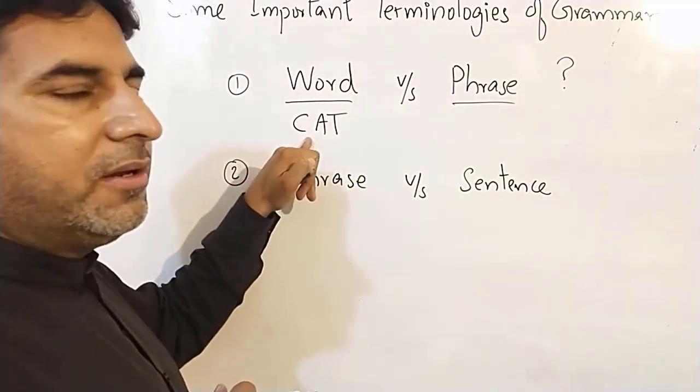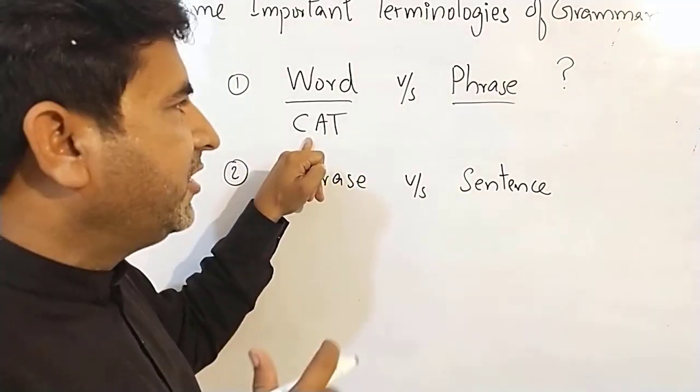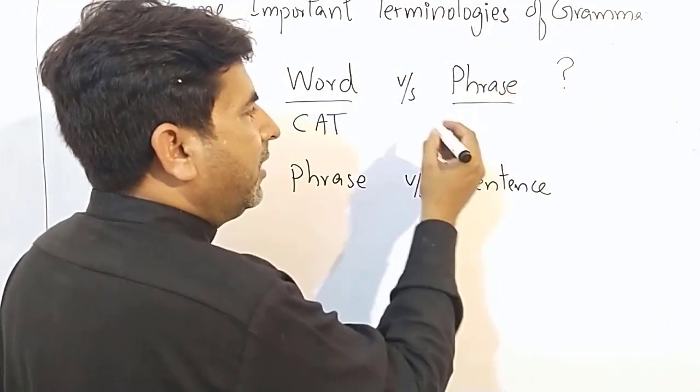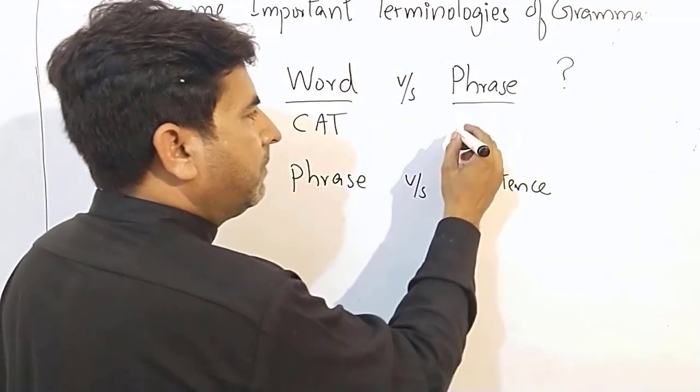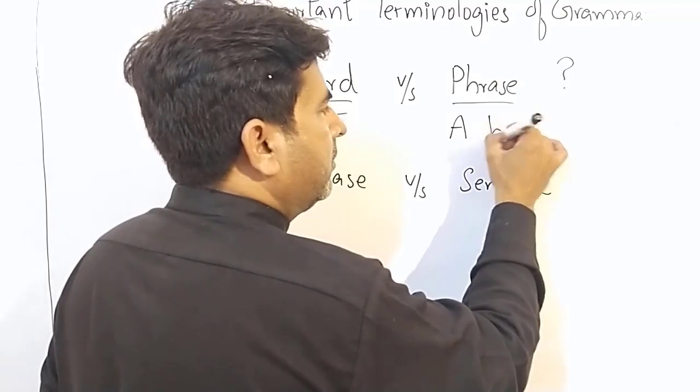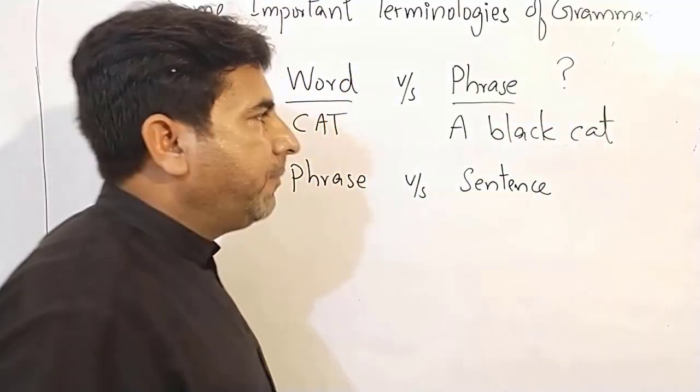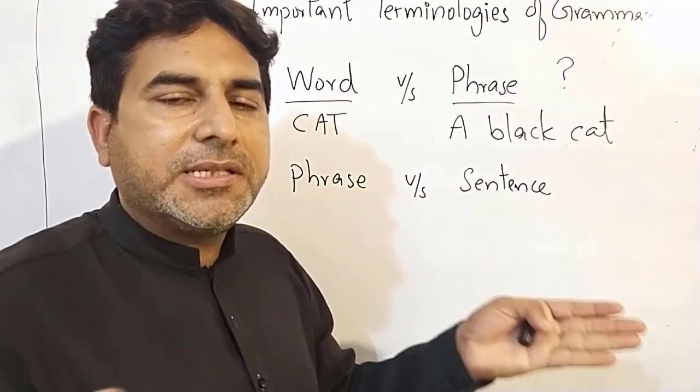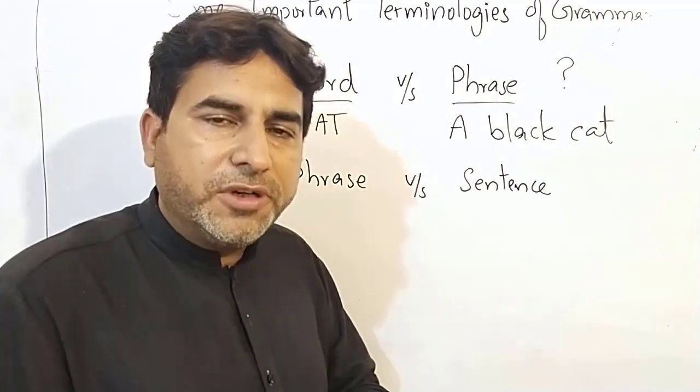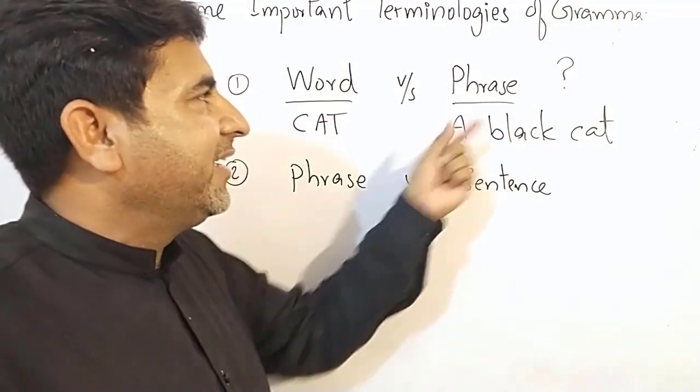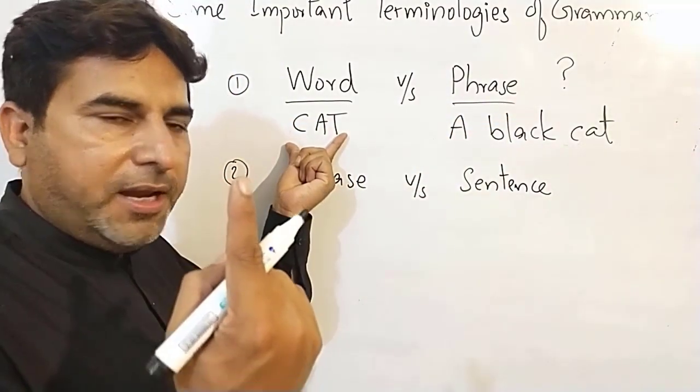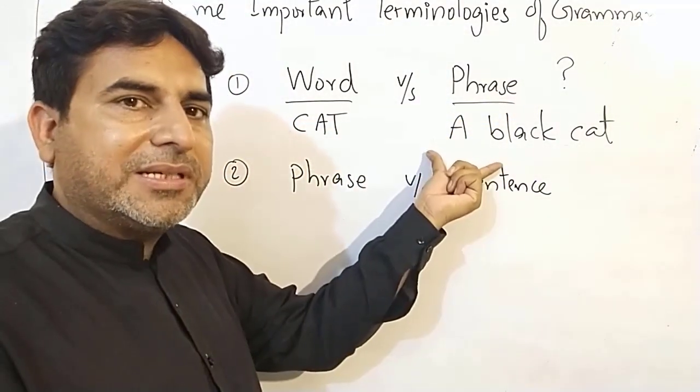To ye word ki definition hai. Isi tarah phrase, combination of words. So when combination of words is there, that becomes a phrase.